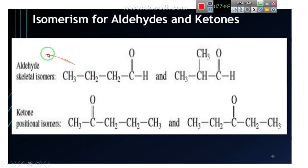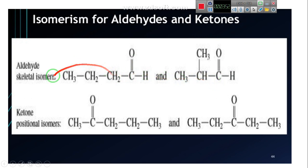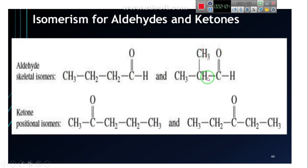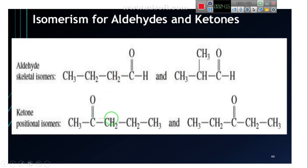Aldehydes are generally recognized because the C=O is always at the end of the chain. Aldehydes with aldehydes will always be skeletal isomers — the difference is only in the skeleton. For example, butanal (one, two, three, four) and 2-methylpropanal (a three-carbon main chain with a methyl branch) are skeletal isomers of each other.